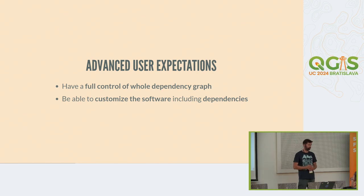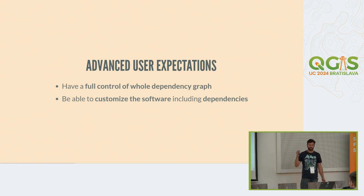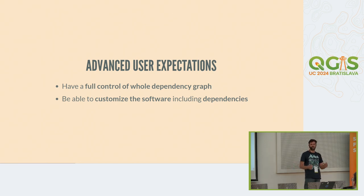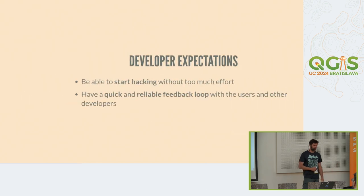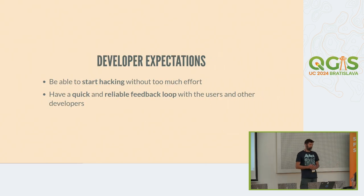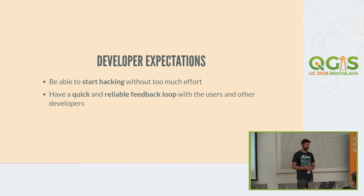Advanced users might say they want full control over everything coming to their computer — the whole dependency graph — not only the QGIS version but also the GDAL version, Qt version, or anything in between. They want to customize those dependencies; for example, if there's an improvement or bug fix in GDAL they want it in their QGIS. And developers want to just grab source code and start hacking, and they want a very efficient feedback loop so they can change something and quickly know whether it works or not.